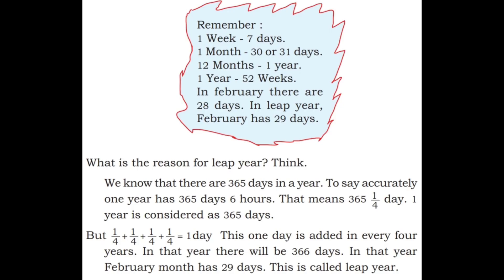Remember: 1 week is 7 days, 1 month is 30 or 31 days, 12 months is equal to 1 year, 1 year has 52 weeks. In February there are 28 days, and in a leap year February has 29 days. We know there are 365 days in a year — to say accurately, 1 year has 365 days and 6 hours, that means 365 and one-quarter days. This one-quarter accumulates over 4 years to make 1 extra day, added every 4 years, making 366 days — this is called a leap year.